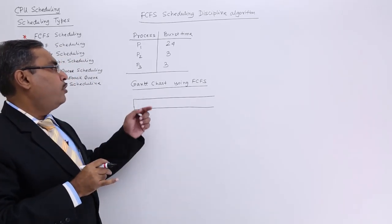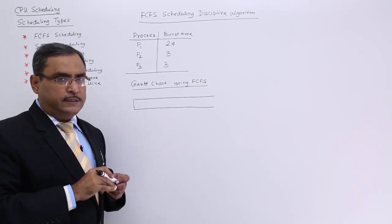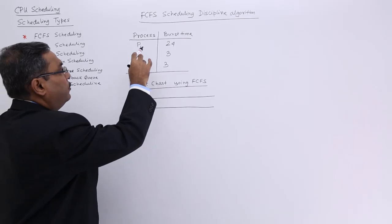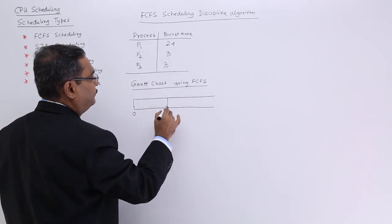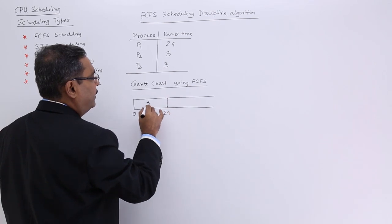Now we are going to draw a Gantt chart using FCFS scheduling discipline. First, P1 will be starting from 0 up to 24, where P1 will be executing.